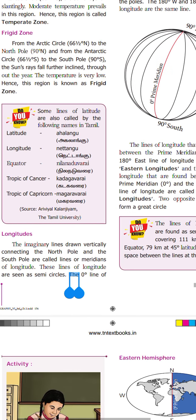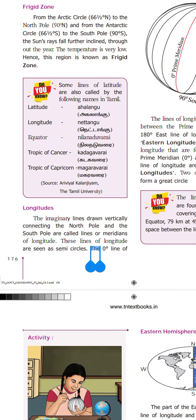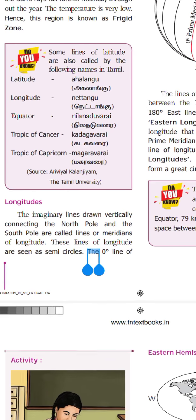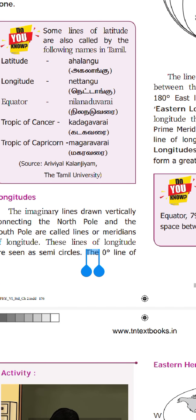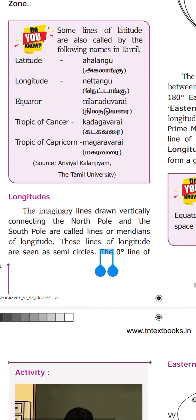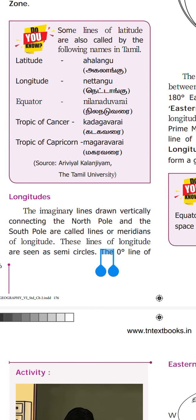These lines are called longitudes or meridians of longitude. Meridians is another name for them. These lines of longitude are seen as semicircles.